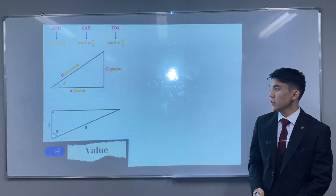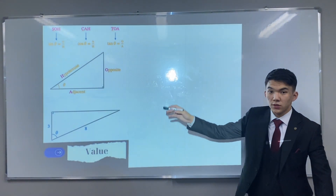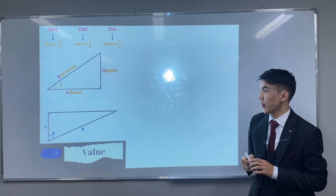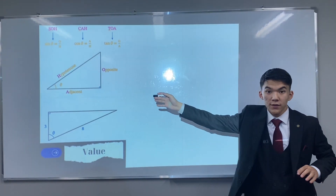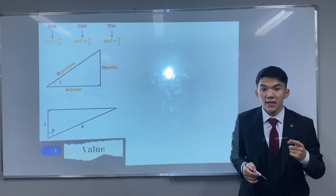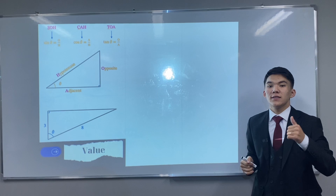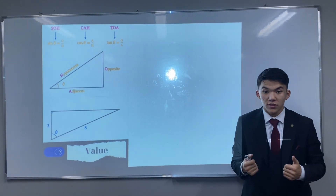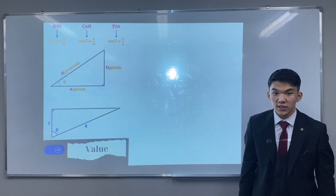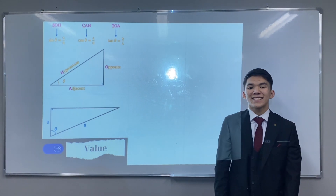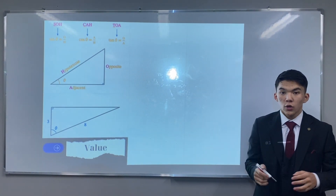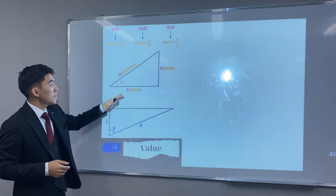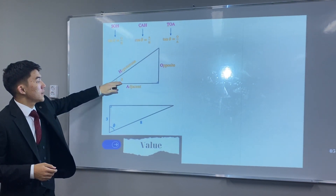First of all, you have to know these terms. The first one: the hypotenuse is always the longest side of a right triangle. The second one: the opposite side is the side directly opposite the angle concerned. The third one: the adjacent side is the side next to the angle which is not the hypotenuse.